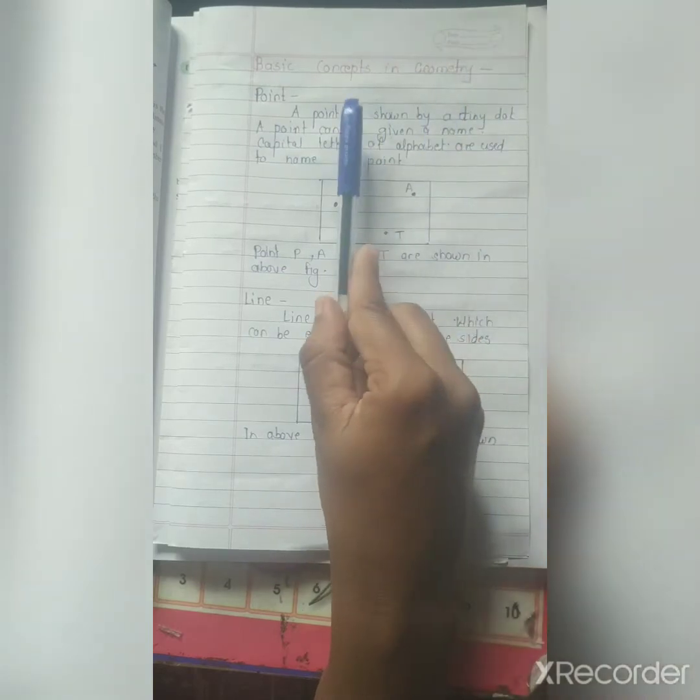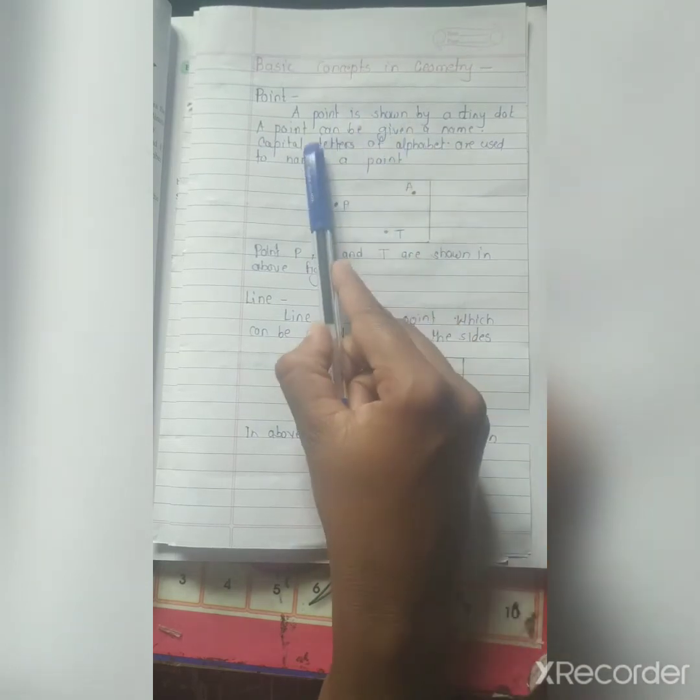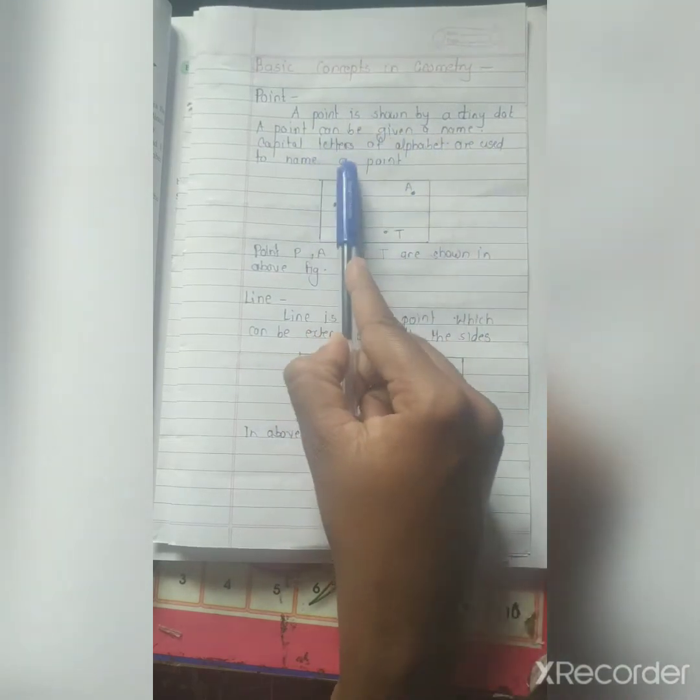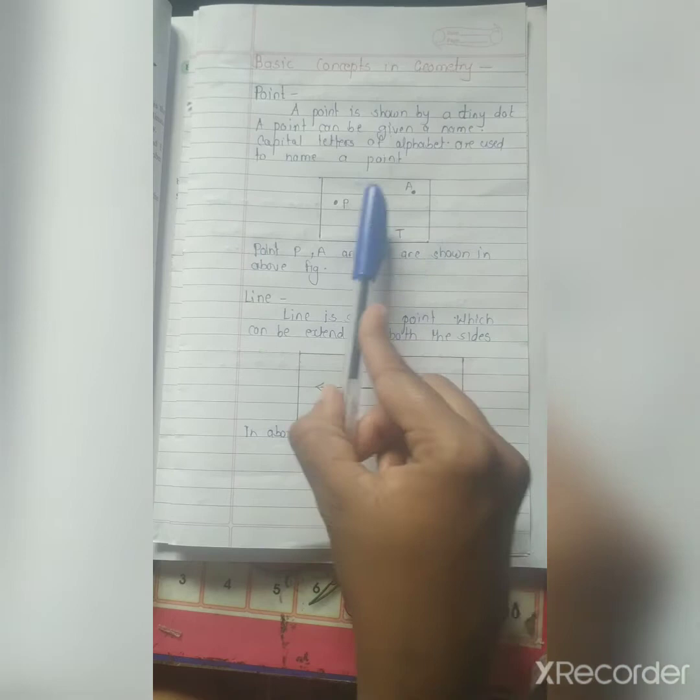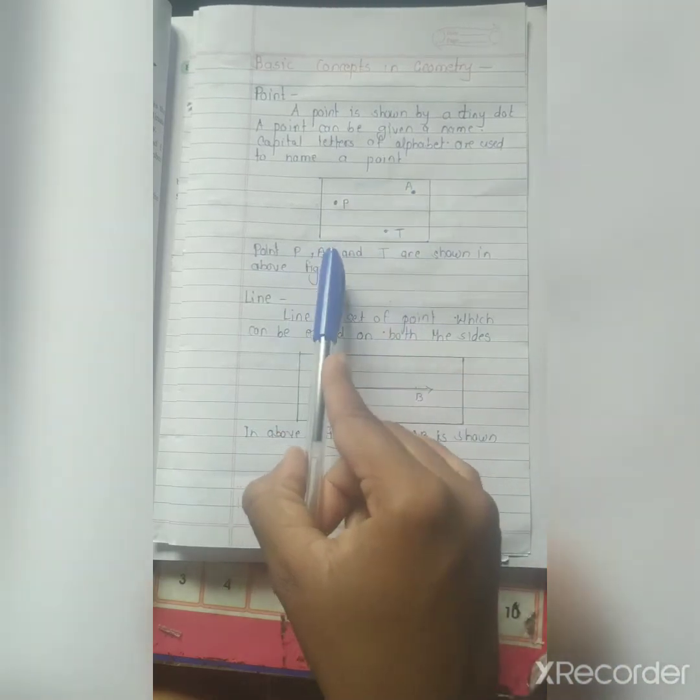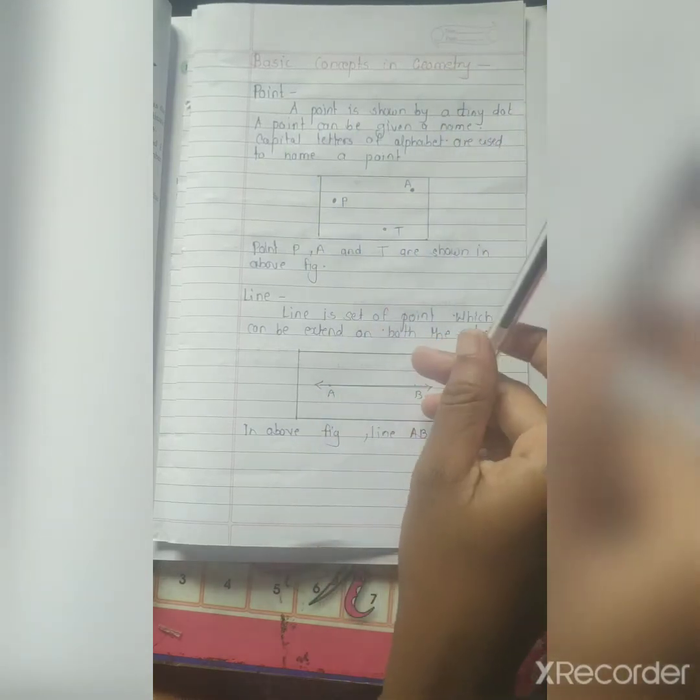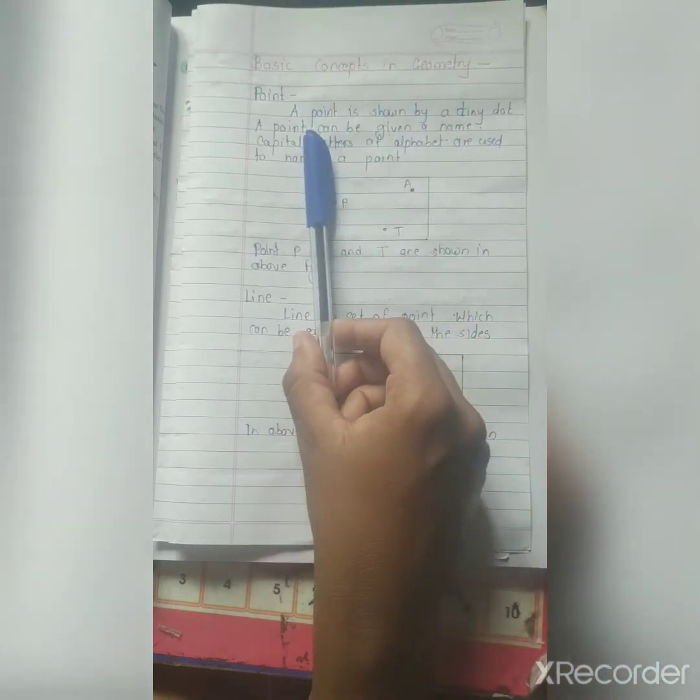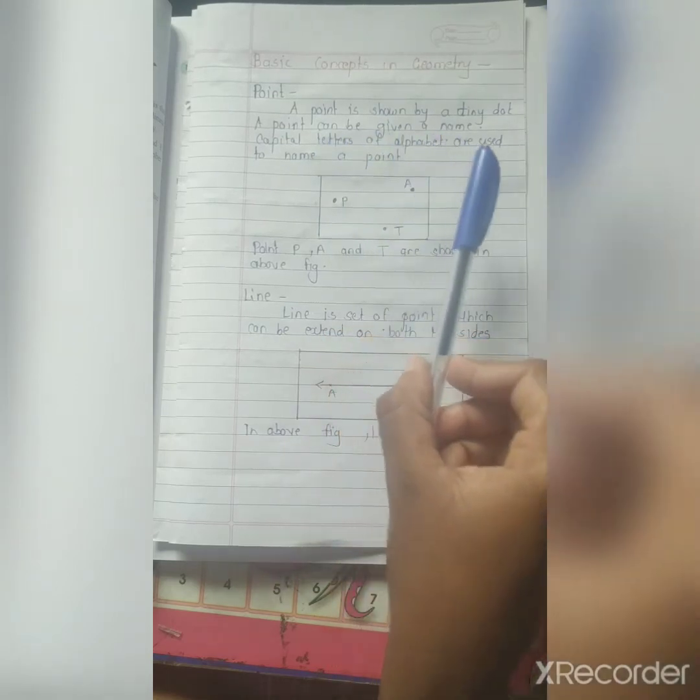Hello everyone. We are learning mathematics part two, first lesson, basic concepts in geometry. The first basic concept is point. Now, what is meant by point? A point is shown by a tiny dot. A point can be given a name. Capital letters of alphabet are used to name a point. Point means any tiny dot is nothing but the point. In this figure, there are some points given: Point P, point A, and point T are shown in a figure. You can name a point using capital letters of alphabet.